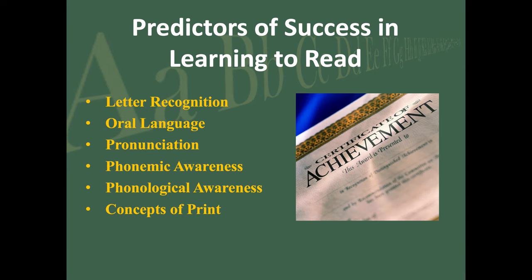The predictors of success in learning how to read — whether you're a native speaker or an English learner — include letter recognition, oral language, pronunciation, phonemic awareness, phonological awareness, and concepts about print. Being proficient in those are all early predictors of learning how to read.